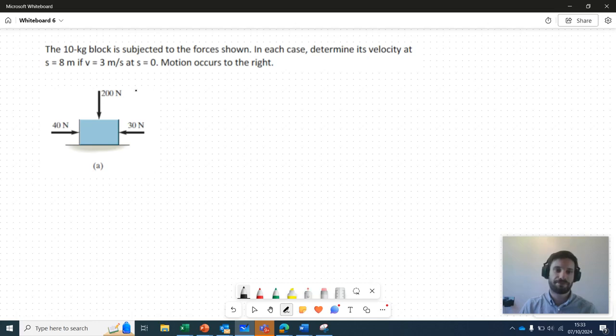First of all, we've got both horizontal and vertical forces acting on this block here. Now, I'm going to say we should ignore the vertical force here. The reason being is because if you wanted to draw a full free body diagram of what's going on here, you'd have this 200 Newton external force acting vertically, but you'd also have the weight of the block acting down and you'd also have the normal force acting.